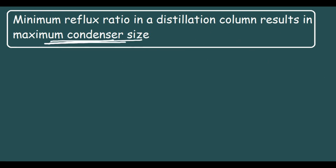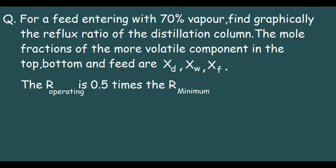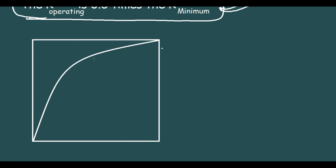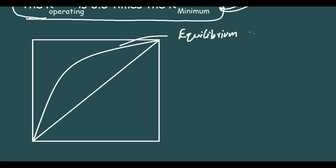Now we will solve a problem. The question says: for a feed entering with 70% vapor, find graphically the reflux ratio of the distillation column. The mole fractions of the more volatile component in the top, bottom, and feed are given. The important clue is that R_operating equals 0.5 times R_minimum. No specific numbers are used here — I'll just show the method. First we draw the equilibrium curve, then the diagonal line.